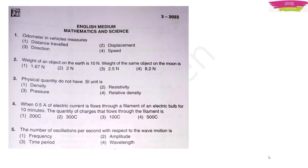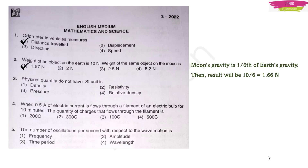The first question: an odometer in vehicles measures distance traveled. The next question: the weight of an object on Earth is 10 Newtons; the weight of the same object on the Moon is — moon's gravity is one-sixth of Earth's gravity, so the result will be 10 divided by 6, which equals approximately 1.67 Newtons. Next: the physical quantity that does not have an SI unit is relative density, because density divided by density cancels the units.